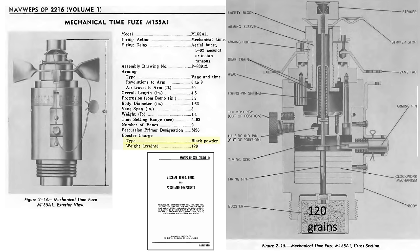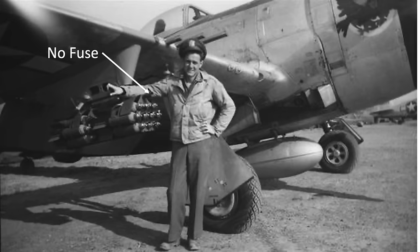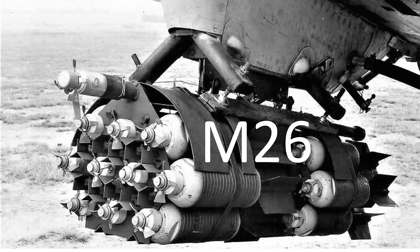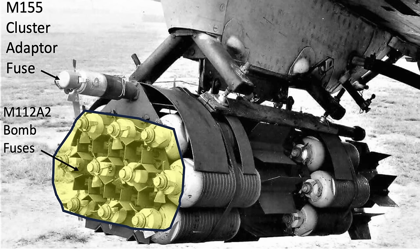The booster cup contains 120 grains of black powder. To summarize: if a cluster contains 20 M41 fragmentation bombs, then it is the M26 model. If no fuse is attached to the M26's upper tubular support, then the fragmentation bombs will be released from the cluster at cluster release from the airplane. If the M26 cluster's frame tube does have an M155 fuse attached, then the entire cluster will be released from the plane, and the 20 M41 fragmentation bombs will separate from the tumbling cluster after the fuse time countdown, which will have been preset to a duration between 5 and 92 seconds.